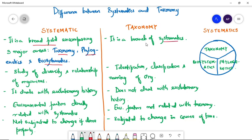Systematics is the study of diversity and relationship of organisms, while taxonomy is the identification, classification and naming of organisms.